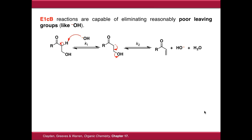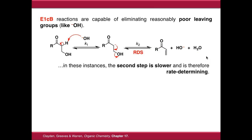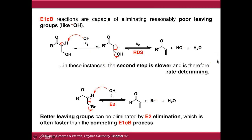E1CB reactions are capable of eliminating reasonably poor leaving groups. Hydroxide is normally not a very good leaving group and cannot normally be eliminated through SN2, but an E1CB reaction can eliminate hydroxide because the anionic intermediate builds up and this relatively slow elimination then occurs. The second step is slower and becomes the rate determining step, which is why this is E1CB. If you have a better leaving group such as bromide, E2 becomes much faster, and therefore E1CB is not as dominant.